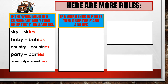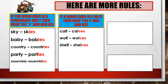If a word ends in F or FE, then drop the F and add VES. Here are some examples: one calf, many calves. One wolf, many wolves. One shelf, many shelves. One loaf, many loaves. One knife, many knives. One thief, many thieves.